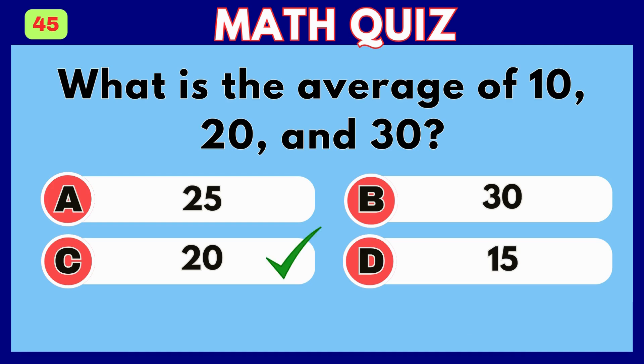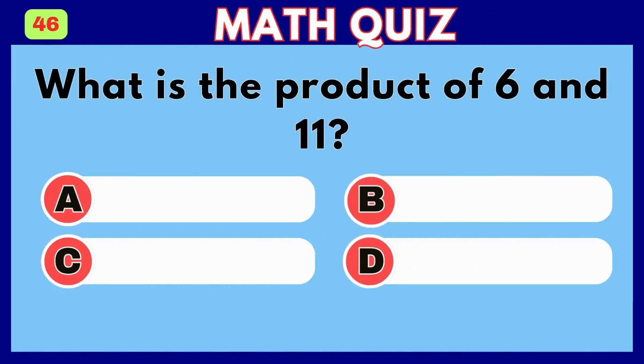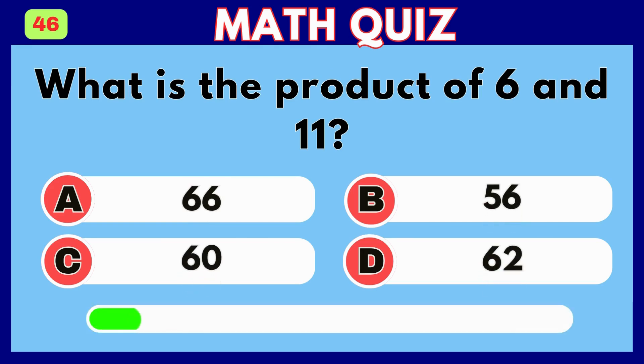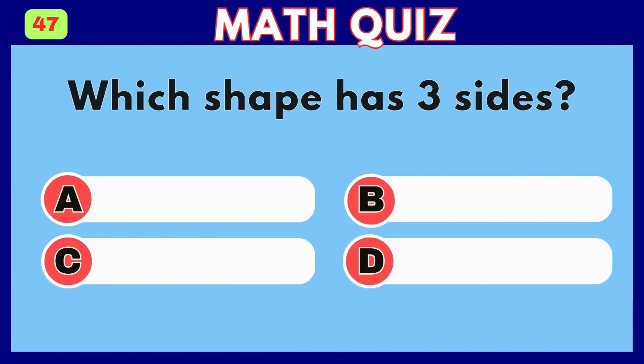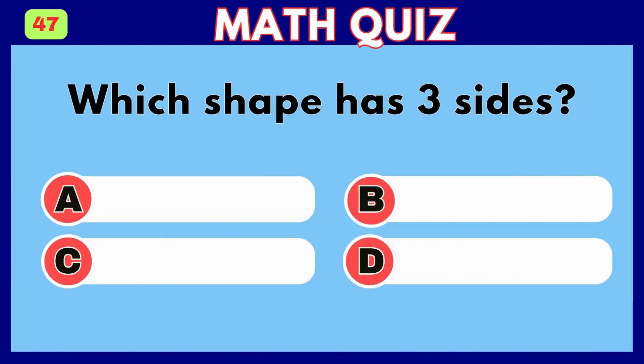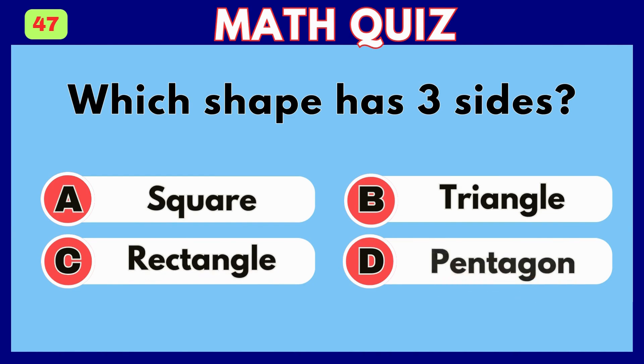Answer C, 20. What is the product of 6 and 11? Answer B, 66. Which shape has three sides: triangle, square, rectangle, or pentagon?